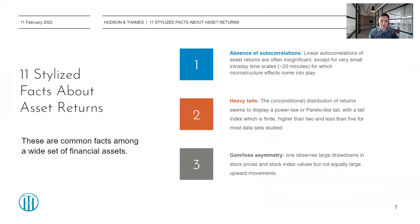Let me quickly present the 11 stylized facts about asset returns as mentioned in Rama's paper. Point one is the absence of autocorrelations: linear autocorrelations of asset returns are often insignificant, except at very small timescales of about 20 minutes, where microstructure effects come into play. Point two is heavy tails: the unconditional distribution of returns displays a power law or Pareto-like tail, with a tail index that is finite, higher than two and less than five for most data sets studied.